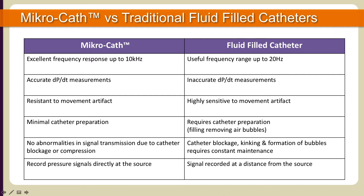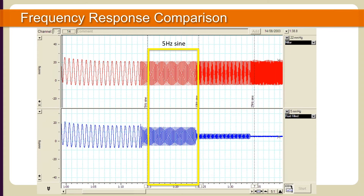This table draws a comparison between the Microcath and traditional fluid-filled catheters. The Microcath's high-frequency response provides greater accuracy than traditional fluid-filled catheters and makes it possible to measure dP/dt with higher reliability. The Microcath sensor is positioned at the pressure source, whereas the transducer used in fluid-filled catheters is positioned externally from the patient. This LabChart tracing provides a comparison: the red channel represents Millar's high-fidelity signal, and the blue channel is the signal acquired from a fluid-filled catheter. Note the signal attenuation on the fluid-filled blue channel when the frequency of the pulse waveform increases from 5 Hz to 10 Hz.